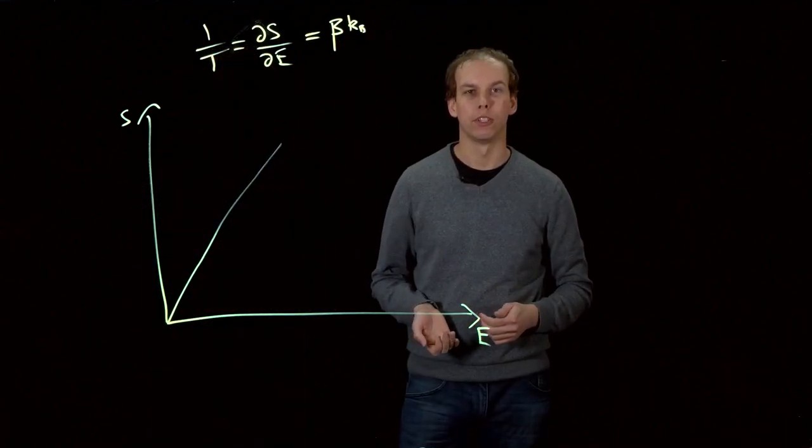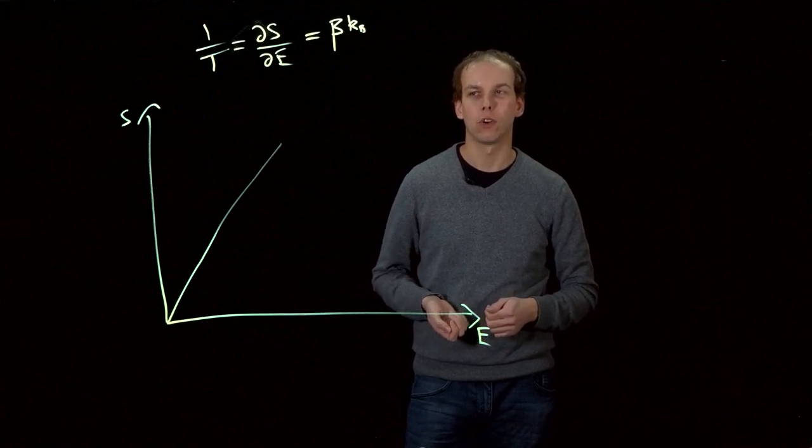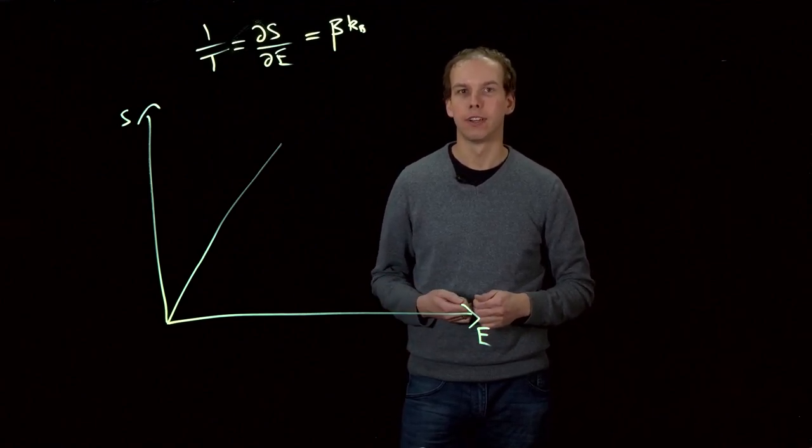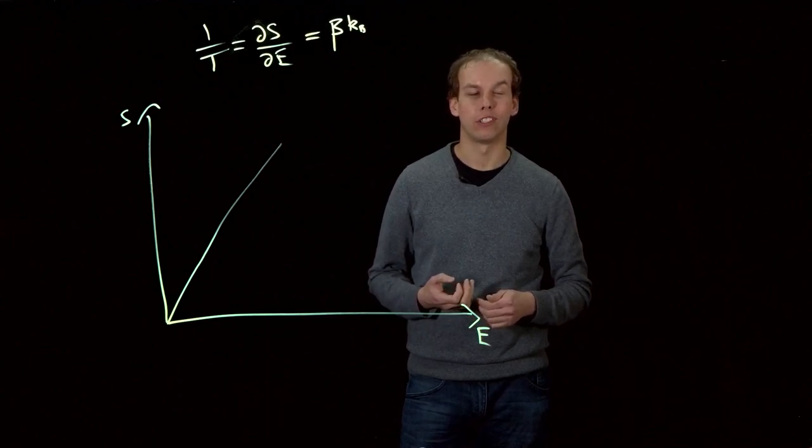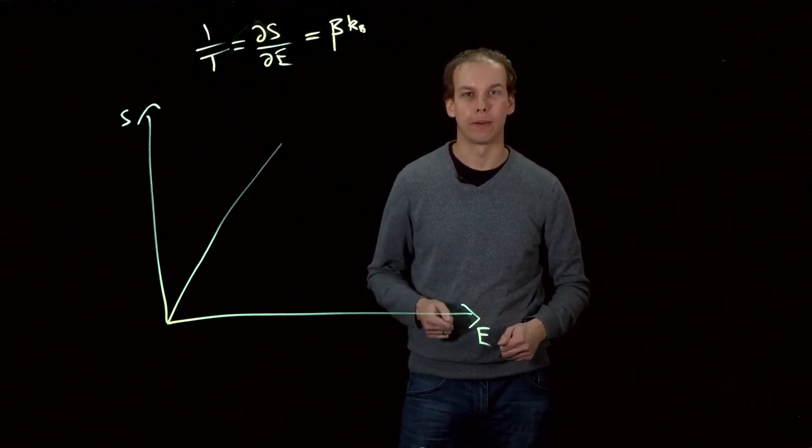In Lars Onsager's description of two-dimensional turbulence, instead of talking about the particles making up the fluid, he talked about the vortices themselves as being the particles to which he assigned a temperature.